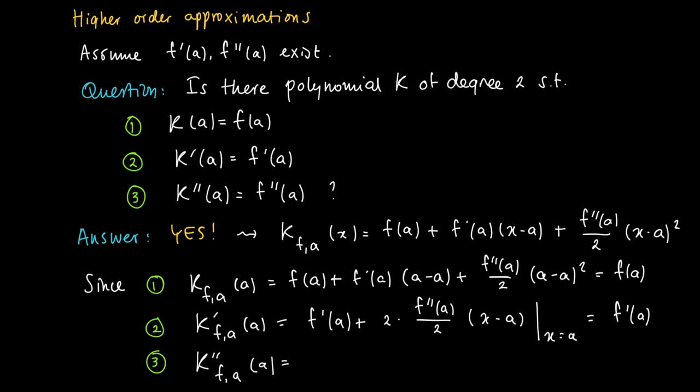And if we take a derivative of the quadratic term twice, so we take the derivative of K prime, then under property 2 we see that we end up with differentiating 2 times f''(a) divided by 2 times (x-a), which gives f''(a), the second order derivative.